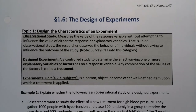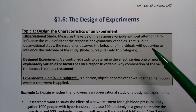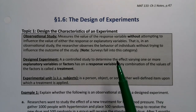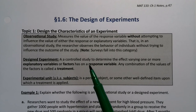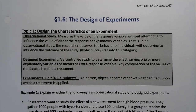First, we have to be able to tell the difference between the two. An observational study is when you measure the value of the response variable without attempting to influence the value of either the response or explanatory variables. The researcher observes the behavior of individuals without trying to influence the outcome of the study. So surveys fall into that category — you're just observing behavior that already exists, not attempting to influence.